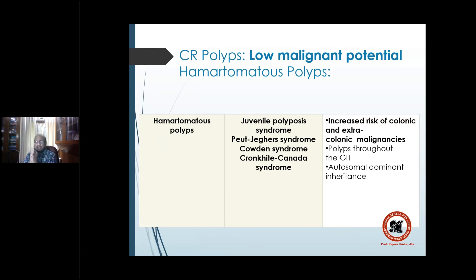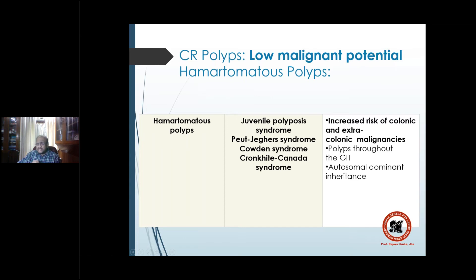The malignant potential summary: hamartomatous polyps — including juvenile sporadic, Peutz-Jeghers, Cronkite-Canada, and Cowden syndromes, all autosomal dominant with small intestinal polyps throughout the GI — have low malignant potential. Serrated polyps (hyperplastic with serrated pattern, sessile serrated, traditional serrated adenoma) have moderate malignant potential at around 5%. High malignant potential: adenomas — tubular 10%, tubulovillous 20%, villous adenoma 40–50%.